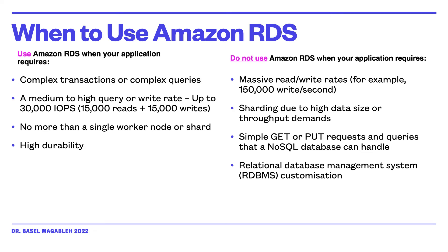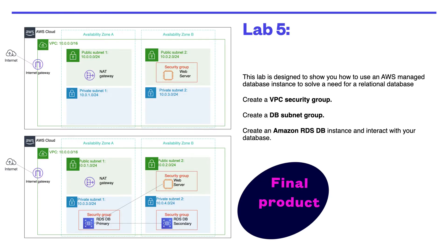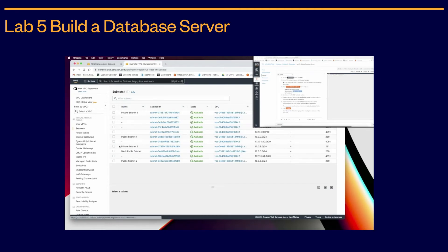Now let us look into lab five. In lab five, we are going to learn how we can create and build our DB server, and then we will launch and configure a web application to interact with the DB server. The lab tasks are: you create a VPC, then you create a DB subnet, then you create an Amazon RDS DB instance. The final product of the lab will look like the diagram shown in this video, and the full solution for this lab can also be seen in the demo.